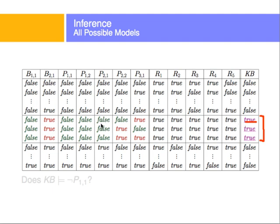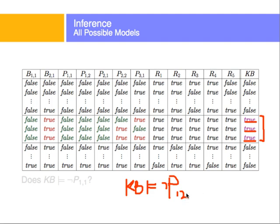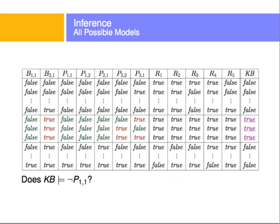Every time the knowledge base evaluates to true, the query not P12 is also true. Therefore, we can conclude the knowledge base entails not P12 — there are no pits at (1,2). Similarly, you can ask whether the knowledge base entails no pit at (1,1) — that's left as an exercise.